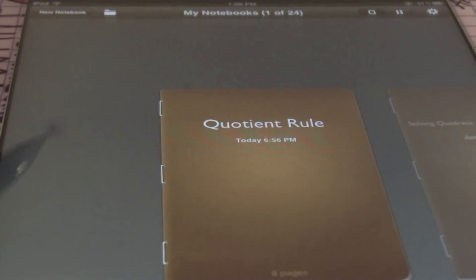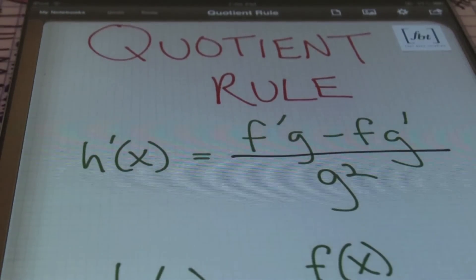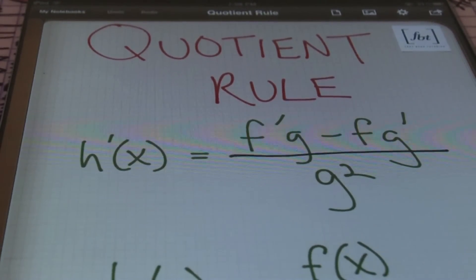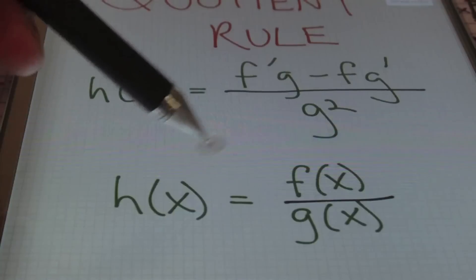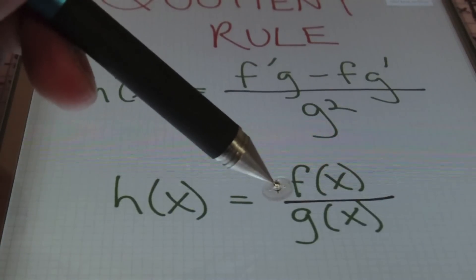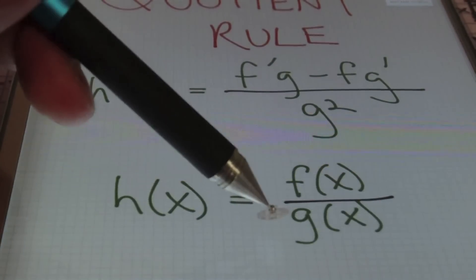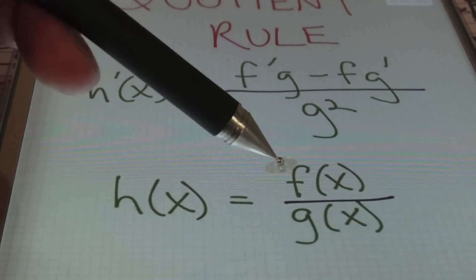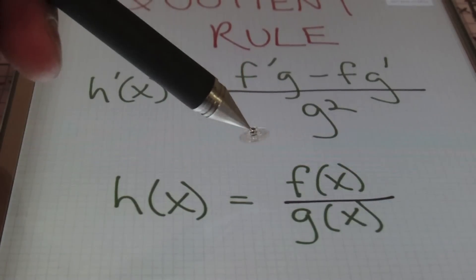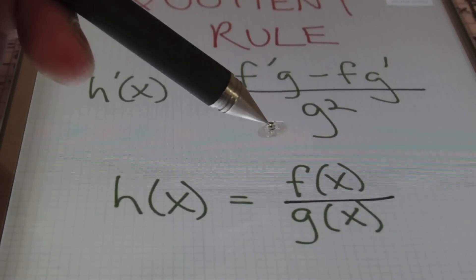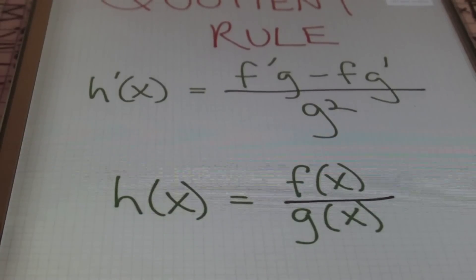Today's lesson is going to be about the quotient rule. The quotient rule is used in calculus classes. The quotient rule, ladies and gentlemen, is used when you're trying to find the first derivative of a function in the form h(x) = f(x) / g(x), meaning you have a function divided by a function — a rational expression, a.k.a. a fraction. So when you have a fraction and you want to find the first derivative, you can use the quotient rule.